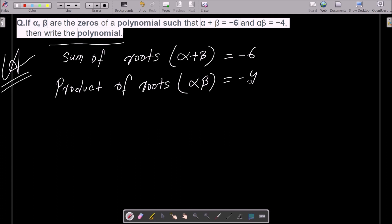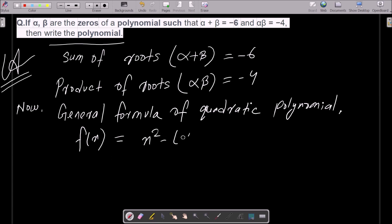After that we need to use the general formula of quadratic polynomial. So what exactly is the formula? This is here f(x), and now the next is here x square minus alpha plus beta x and here alpha into beta. So this is the general formula of quadratic polynomial.